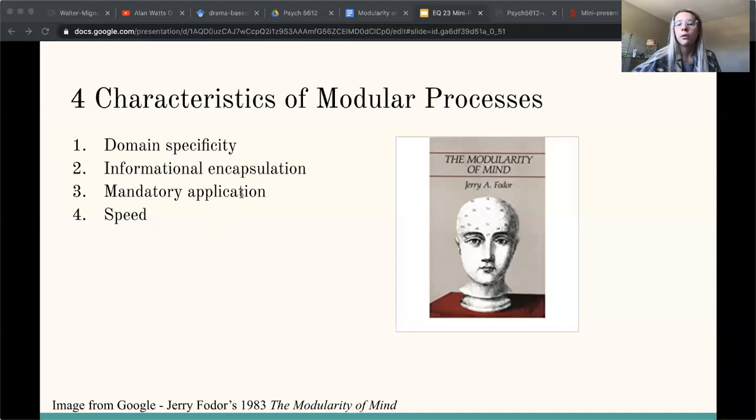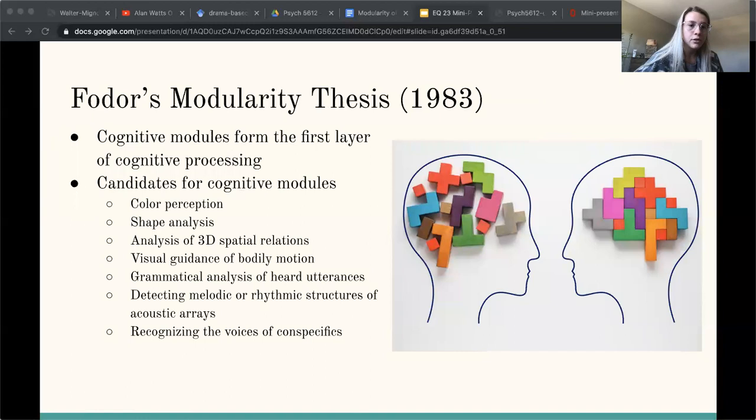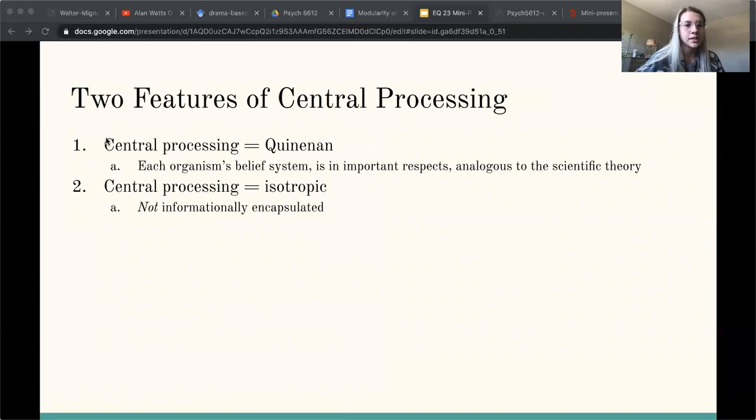Fodor's modularity thesis talks about how cognitive modules form the first layer of cognitive processing. In the image on the right we can actually talk about these multiple bullet points—color perception, shape analysis, facial relations—all of these work together in order to contribute to the big perception of seeing the world the way we see it and interpreting it through information processing. And then that will lead us to contrast to central processing.